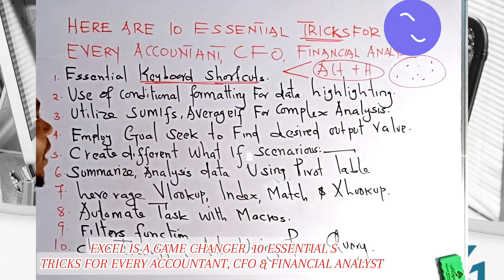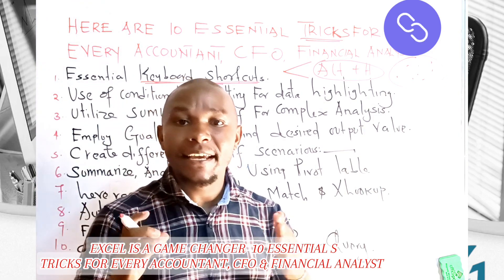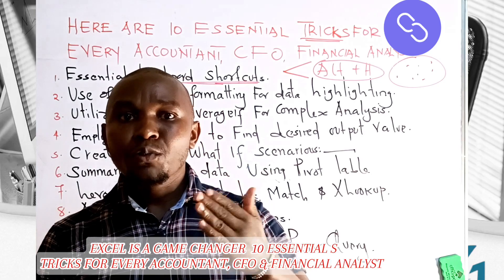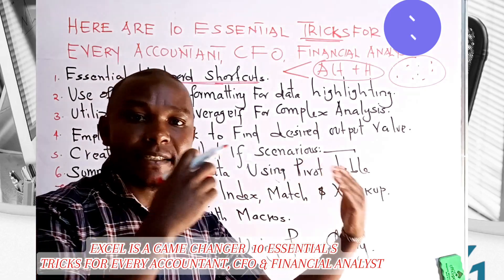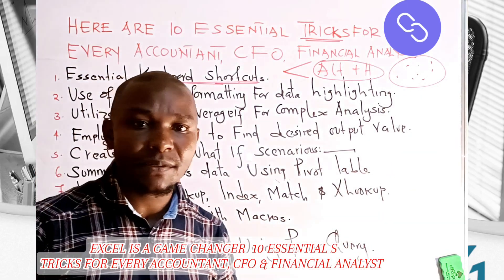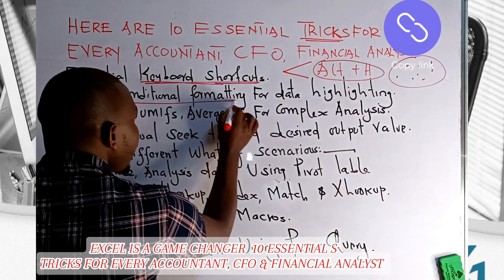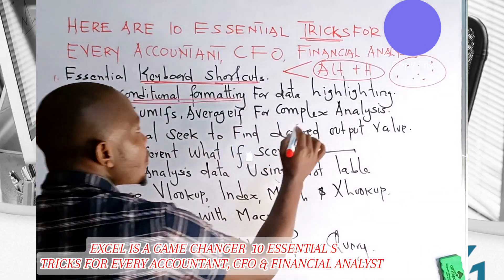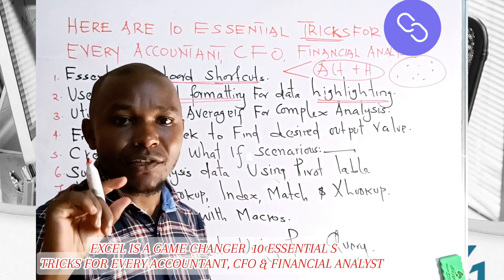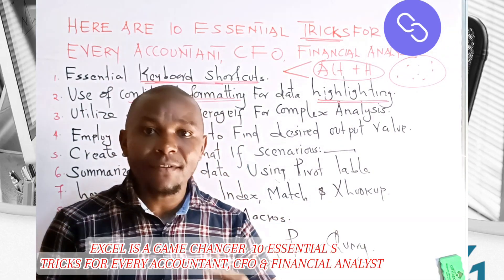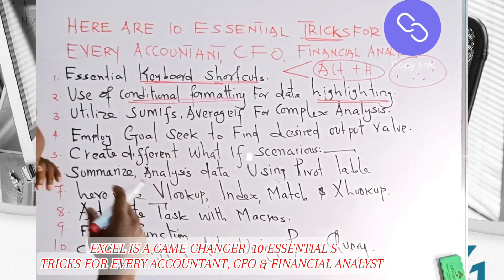Trick number two: as an accountant, you need to identify errors in your financial transactions and verify they are consistent with stakeholder statements — a good example being the bank statement. When you find an error, use Conditional Formatting to highlight or color-code that error. If it is red, it means it is incorrect or contains an error.